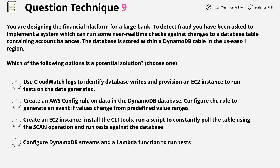The first answer suggests we use CloudWatch logs to identify database writes and provision an EC2 instance. At this point we can just stop reading — we don't even need to read the full answer text. CloudWatch logs is a logging ingestion and management service. It isn't used to identify database writes and it can't directly be used to provision EC2 instances. So let's just remove it. It's not a valid answer and we can remove it even without reading the question.